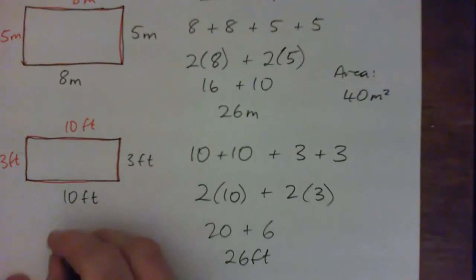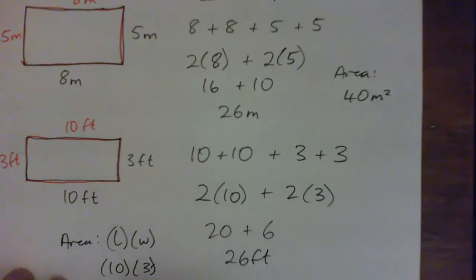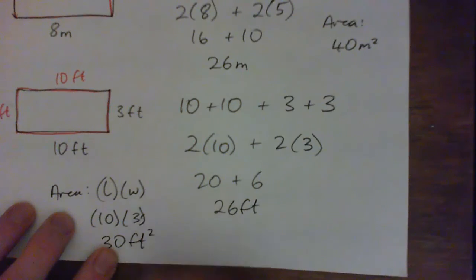And just as an aside, the area of this rectangle is the length times the width, so it's 10 times 3, which is 30 square feet.